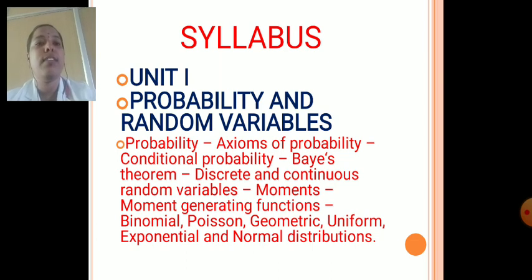That is, Binomial Distribution, Geometric Distribution, Uniform Distribution, Exponential Distribution, and Normal Distributions. Whereas, this Binomial Poisson Geometric were said to be discrete random variables. And Uniform Exponential and Normal Distributions were said to be continuous random variables.